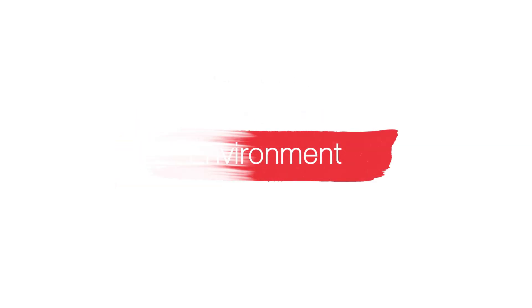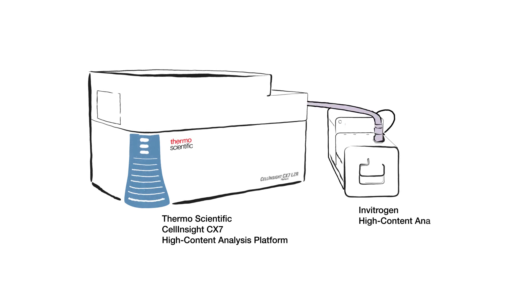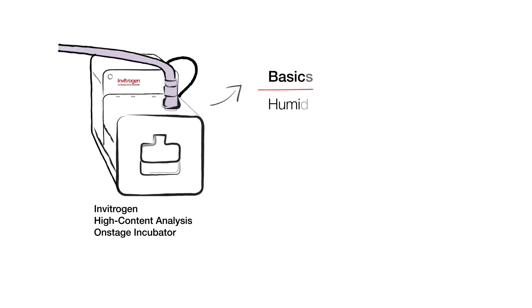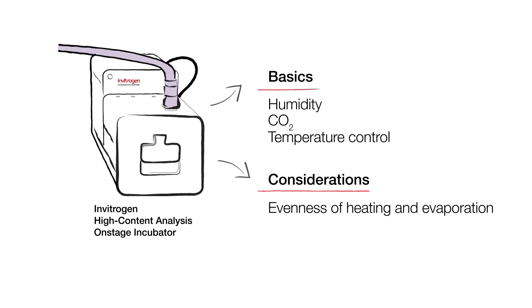Environment. Having realistic expectations is key. HCA systems are not tissue culture incubators — they are designed to keep a stable environment for the length of an assay. Humidity, CO2, and temperature control are the basics. Consider evenness of heating and evaporation, edge effects, and plate types when doing live cell HCA assays.